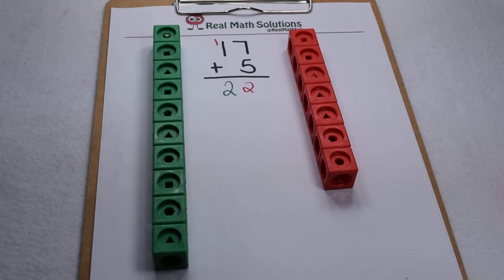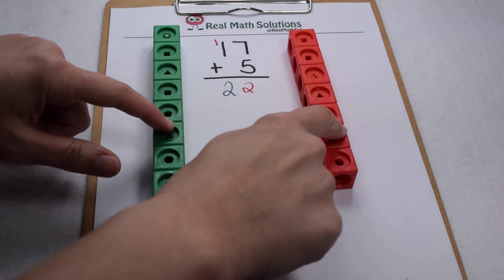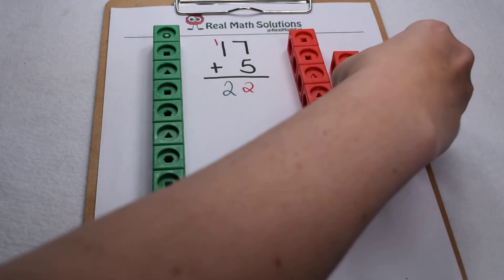Well, how does that tie in with what our kids are doing today with modeling it out? Here we have our 17, 10 and 7, and to that we're going to add 5.